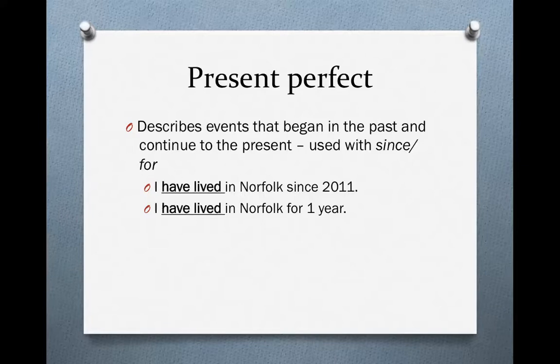The present perfect, in general, has three different possible meanings. Let's look at the first one now. The present perfect can describe an event that began in the past and continues to the present. In these cases, it is usually used with 'since' or 'for.'